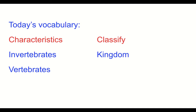The first word is characteristics. Characteristics are something that makes a person, thing, or group different. To classify means to put things into groups based on similarities or types. Invertebrates are animals that do not have a backbone. A kingdom is a major group into which all living things are classified. So listen to the story today to see if you can hear those words.